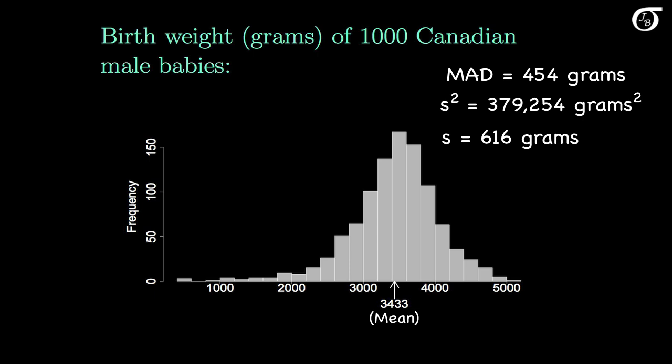Because the variance and standard deviation involve squared deviations, they can be sensitive to extreme values. Very large or very small values can inflate the variance and standard deviation, and here we do have some extreme values in the left tail. Interpreting the variance and standard deviation is not all that easy — the standard deviation is the square root of the average squared distance from the mean, which is tough to interpret. So let's look at something that might help.